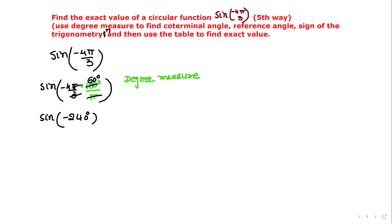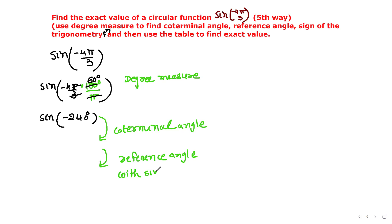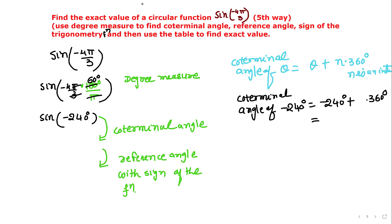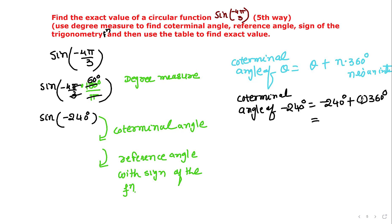Using the coterminal angle formula, we also note the sign of the function in the particular quadrant. Choosing n = 1: -240° + 360° = 120°. So the least positive coterminal angle for -240° is 120°.